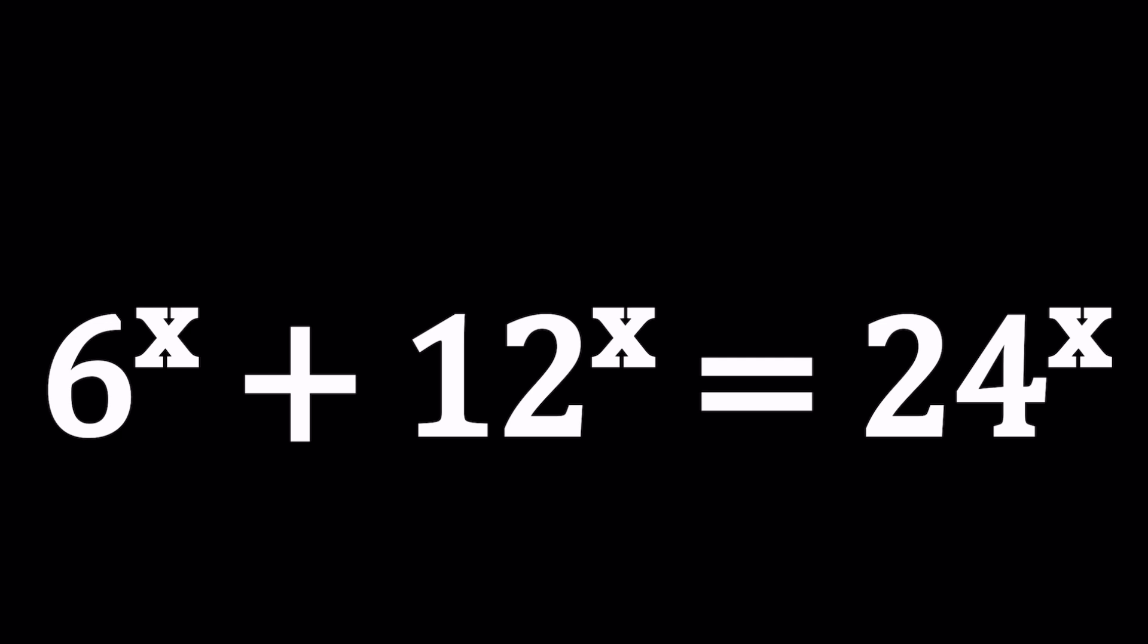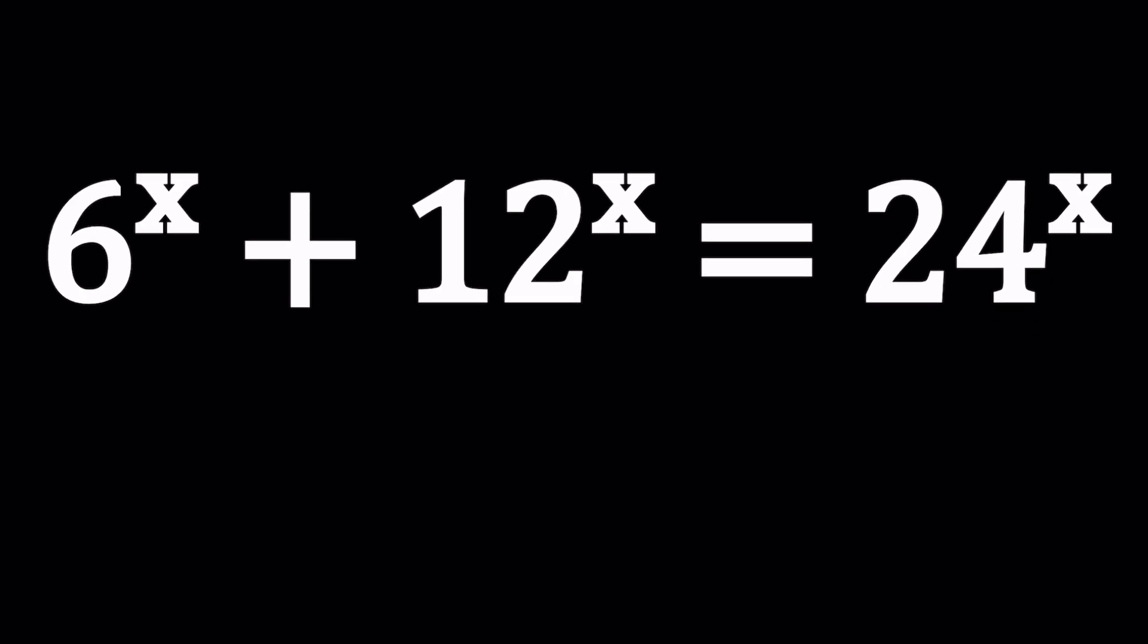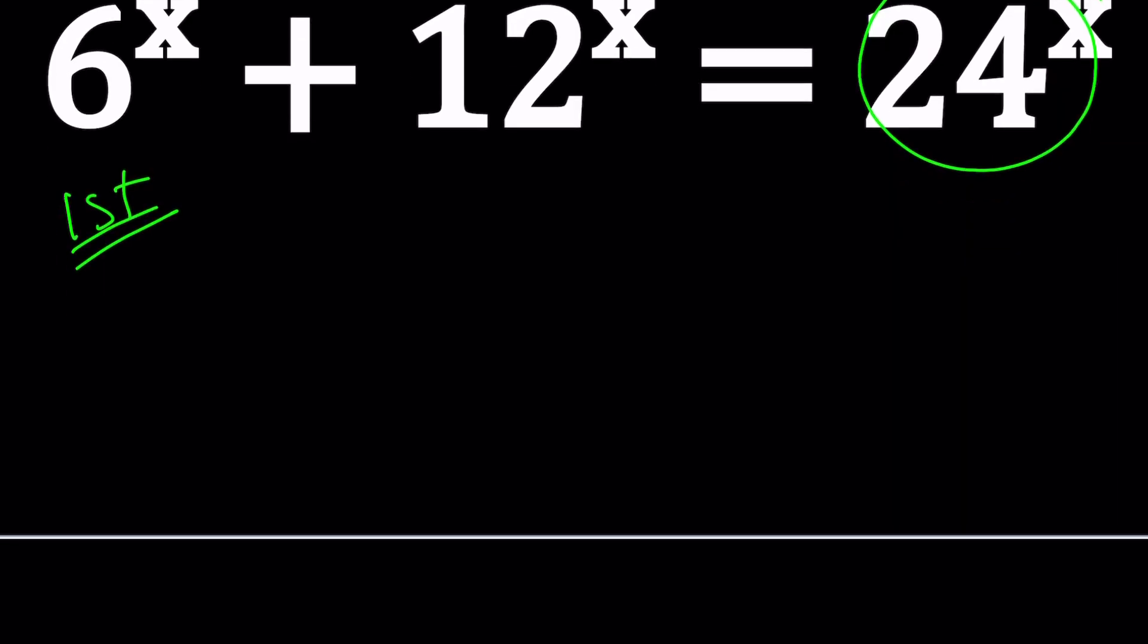Now we're going to solve this problem in two different ways. Let's start with the first method. For my first method, I'm going to do what is pretty standard for these kinds of equations. I'll divide everything by the expression with the highest base, which happens to be 24^x. My goal is to get 1 on one side, and then on the other I want to get fractions that are less than 1. So let's divide everything by 24^x.